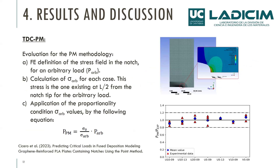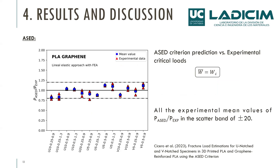The other methodology we used is the point method. We applied this procedure with an independent analysis to determine the notch tip stress, applying an arbitrary load. We calculated the stress for the arbitrary load and determined the critical distance. By applying a proportional factor, we obtained the inherent strength and calculated the critical load for the specimen. All average values for the specimens are inside 20% of the experimental value, which is a good approximation.